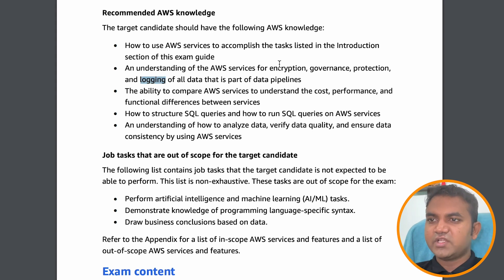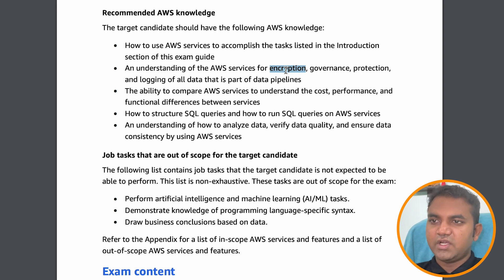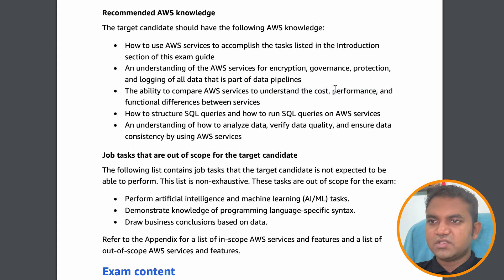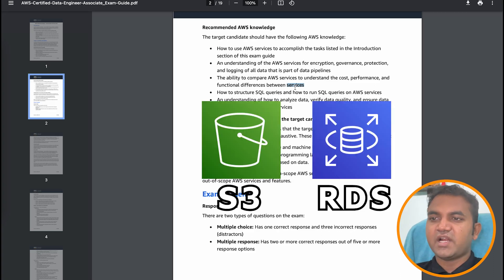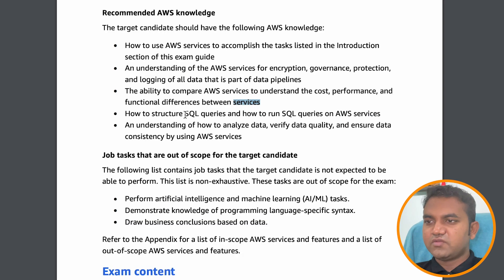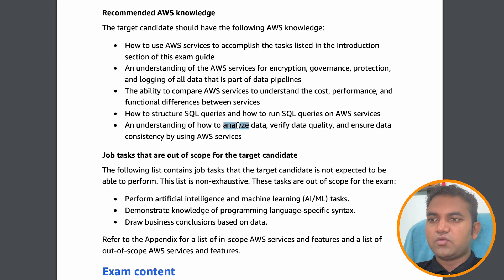The exam also covers AWS services used for encryption, governance, protection, and logging. For encryption there is KMS; for governance and compliance there is AWS Config; for protection there are built-in services; and for logging you can use CloudWatch. You should also be able to compare AWS services to understand cost, performance, and functional differences — for example, the difference between S3 and RDS: S3 stores object data while RDS stores data in a more structured relational way. Additionally, you need to know how to structure and run SQL queries, analyze data, verify data quantity, and ensure data consistency.